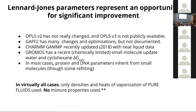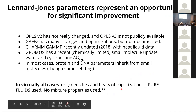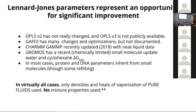Lennard-Jones parameters haven't been revisited in quite some time and certainly merit an opportunity for improving accuracy if co-optimized with everything else. A very recent effort in 2018 by Alex MacKerell and Benoit Roux reparameterized a lot of small molecules using neat liquid data, though we haven't seen how that changes prediction accuracy since it was done independently of other terms. They only used densities and heats of vaporization of pure fluids, but there's so much data on mixtures that reflects how different functional group moieties interact that it seems worth making use of — including binary and ternary mixtures.